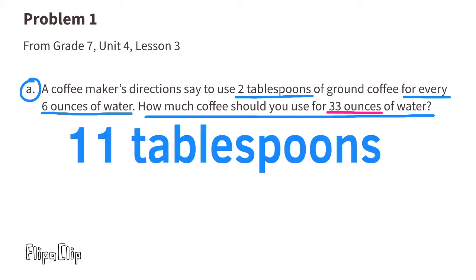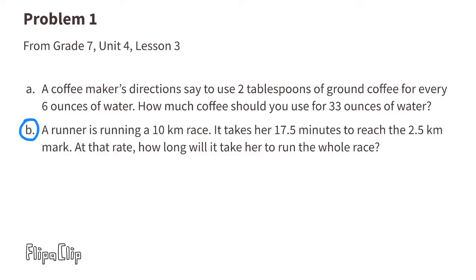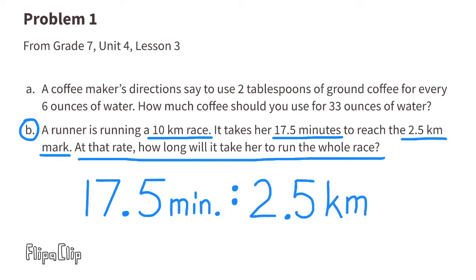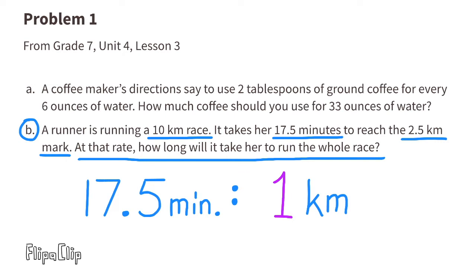Problem 1b: a runner is running a 10-kilometer race. It takes her 17.5 minutes to reach the 2.5-kilometer mark. At that rate, how long will it take her to run the whole race? It takes her 17.5 minutes to run 2.5 kilometers. Let's use this to find how long it takes to run one kilometer. 2.5 divided by itself equals one, so we have one kilometer.